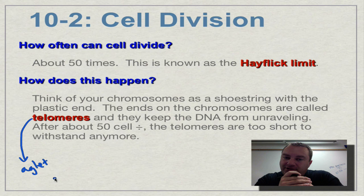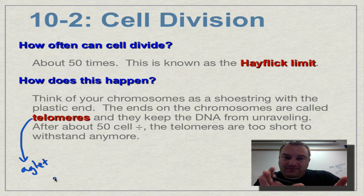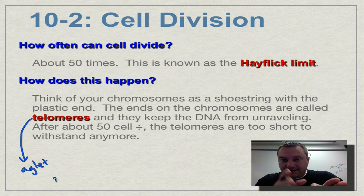If the aglet got shorter and shorter and finally broke off, your shoestring becomes all frayed. We don't want our DNA to be frayed because then it can be damaged — it can't do transcription and translation, and the cell itself is going to have a problem. So it stops dividing at about 50, so that the telomere is still intact enough.